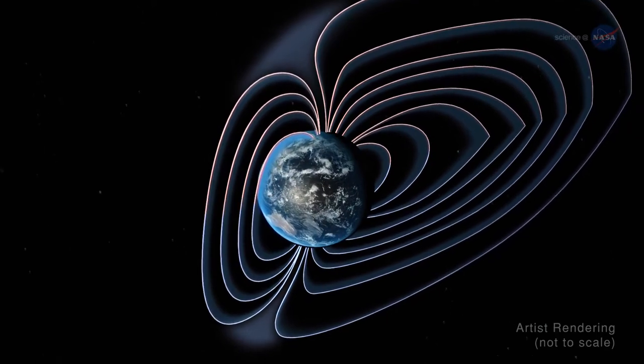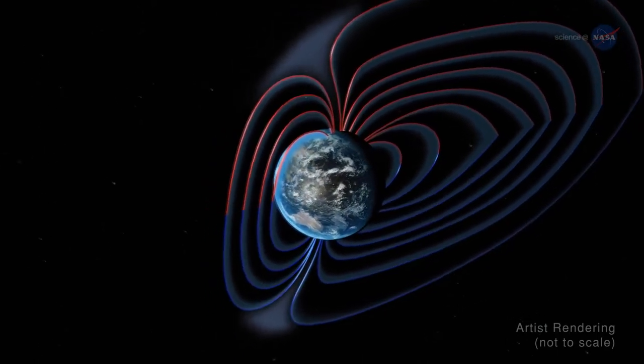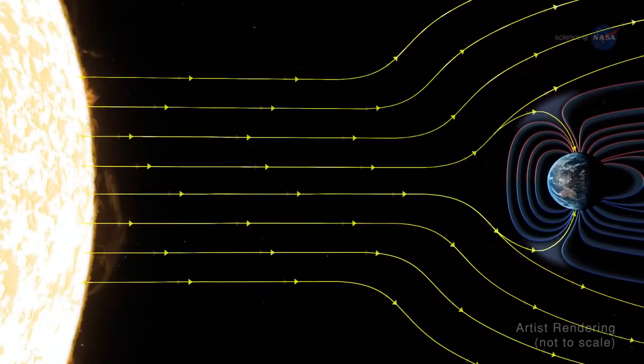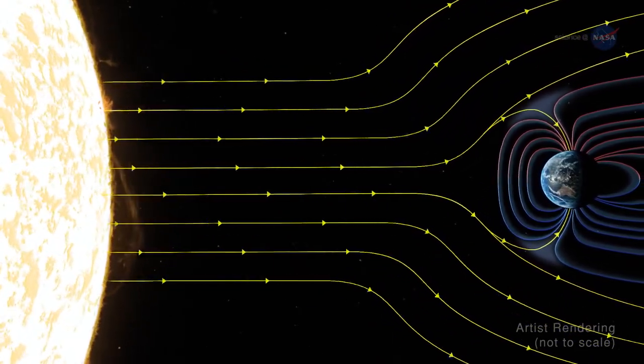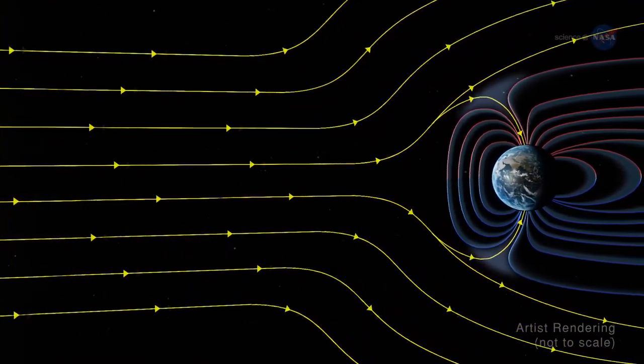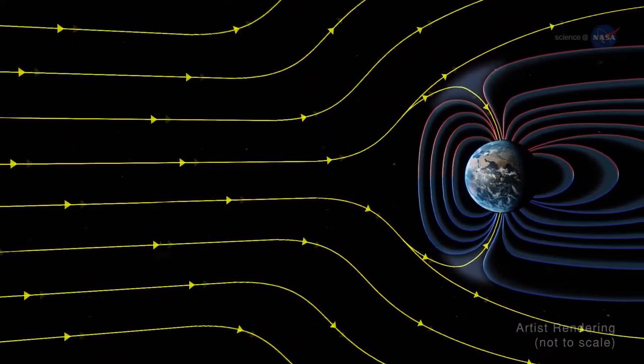Creating a funnel of magnetic lines that touch down to Earth. This funnel allows the sun's high-energy particles to race toward our planet and deposit themselves in our ionosphere, 80 to 800 kilometers above Earth. We can even see the result.